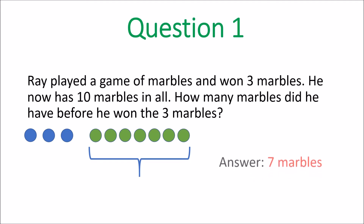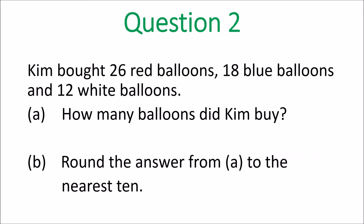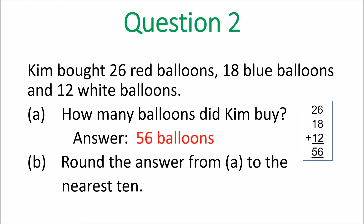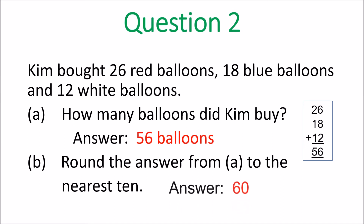Question 2. Kim bought 26 red balloons, 18 blue balloons, and 12 white balloons. You add 26, 18, and 12: you regroup — 6+8+2=16, carry the 1, then 2+1+2+1=6, giving you 56 balloons for A. Now, round 56 to the nearest 10 — is it 50 or 60? It is 60, because 56 is closer to 60.